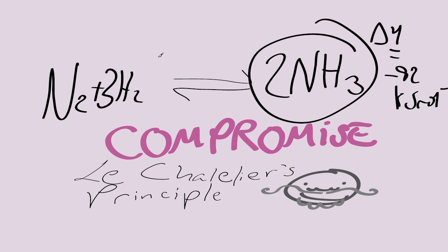A compromise that has to be made is because of rate. There will always be a compromise between yield and reaction rate in an industrial equilibrium process.